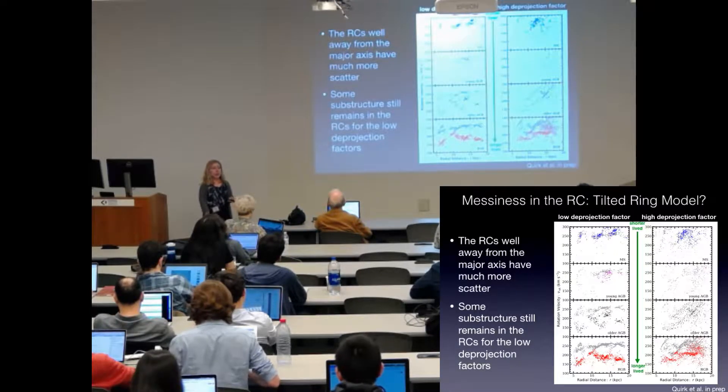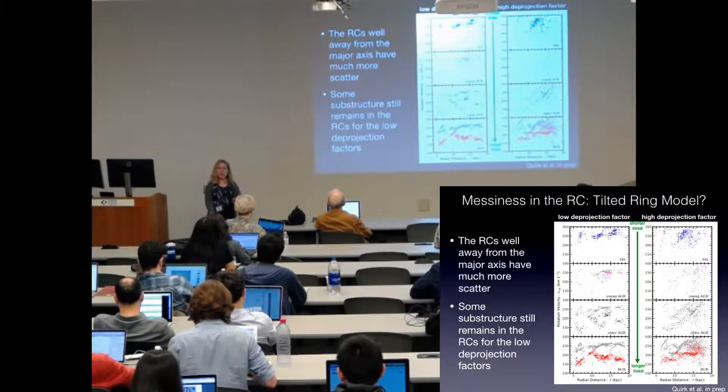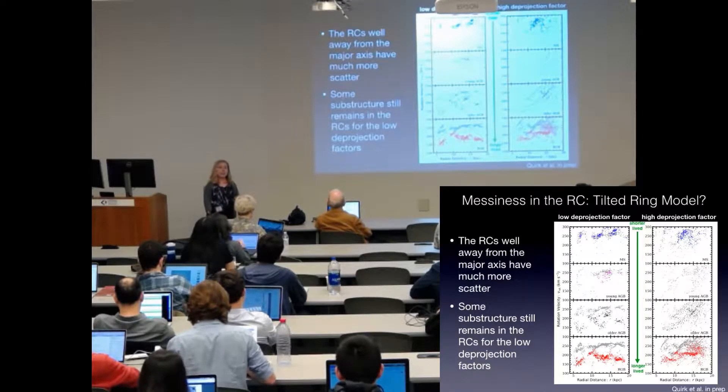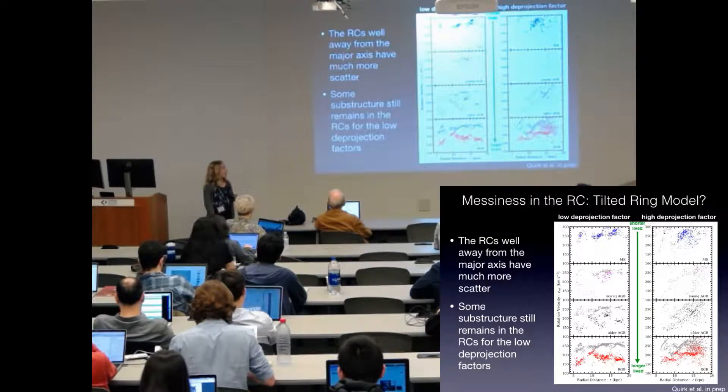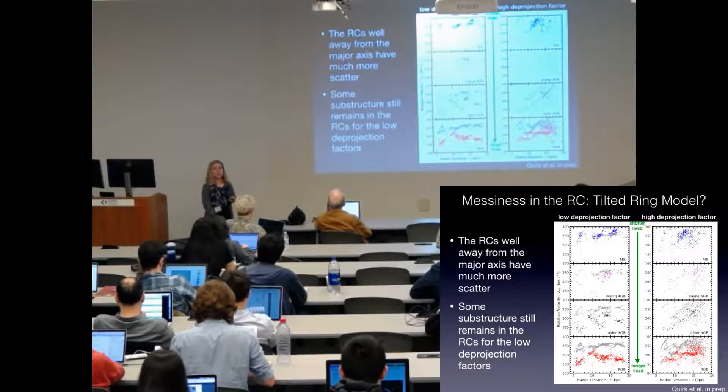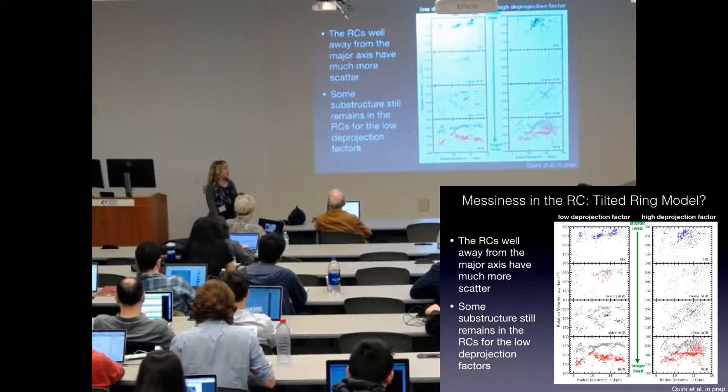So the tilted ring model definitely does not describe Andromeda's complexity in an adequate enough way to deal with the deprojection factor on the minor axis.